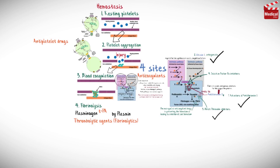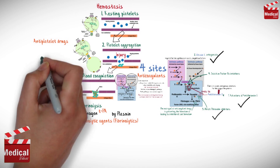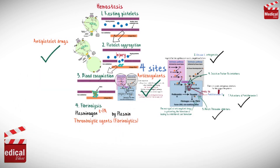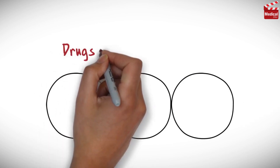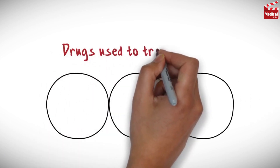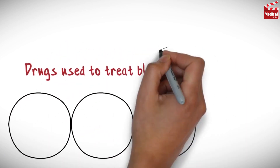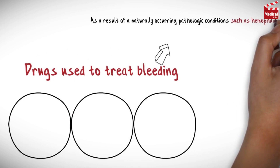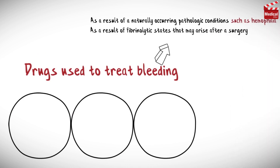In the previous lectures we discussed the antiplatelets, anticoagulants, and thrombolytic drugs. In this lecture we'll talk about the drugs used to treat bleeding. Bleeding may occur as a result of naturally occurring pathologic conditions such as hemophilia, or as a result of fibrinolytic states that may arise after surgery, or as a result of using anticoagulants.